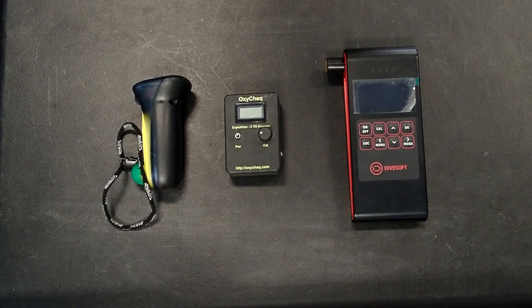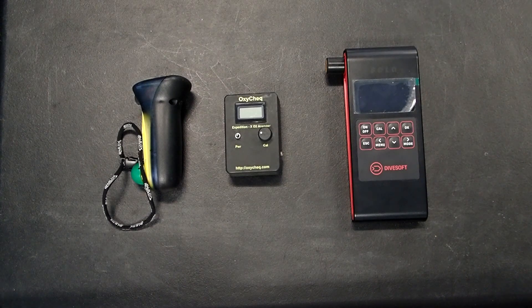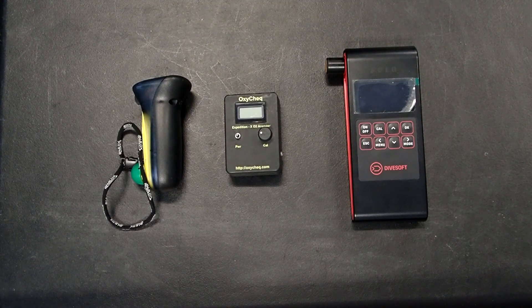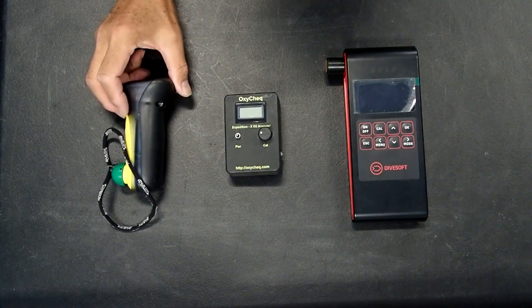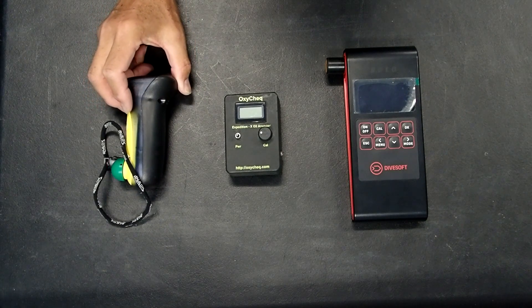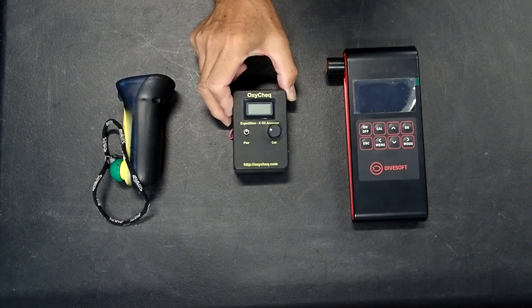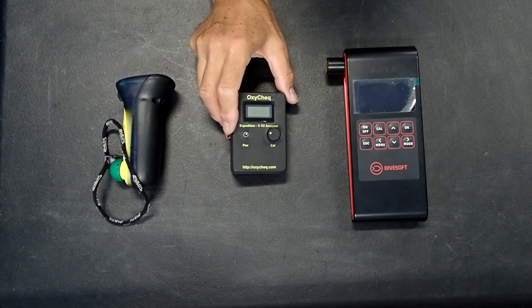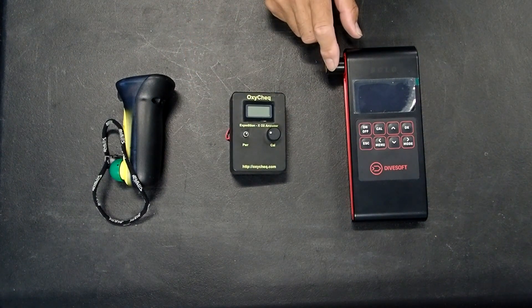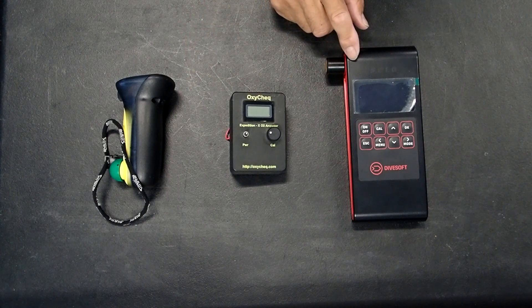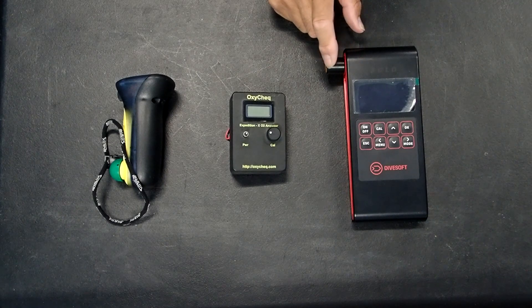We actually use three different types of oxygen analyzers in the shop. Going from left to right, we have an Analox analyzer. This is a handheld analyzer and it only analyzes oxygen. Then we have an Ocicheck, a remote analyzer. And the last analyzer we have is the Divesoft Solo analyzer which can test for both oxygen and helium.